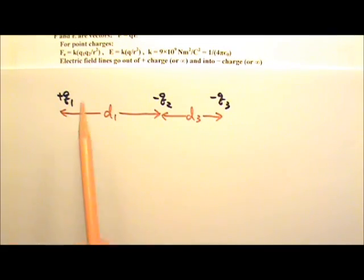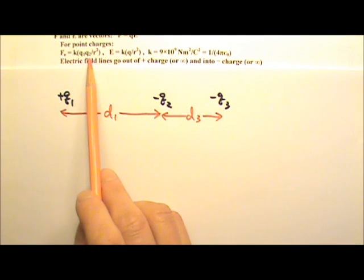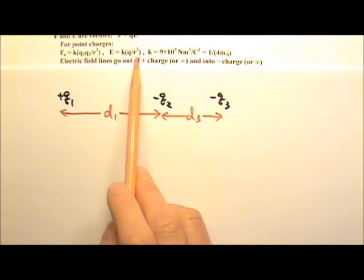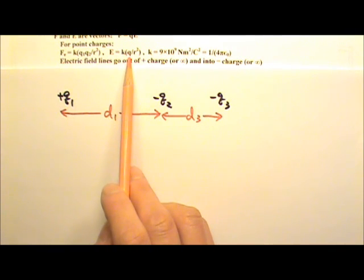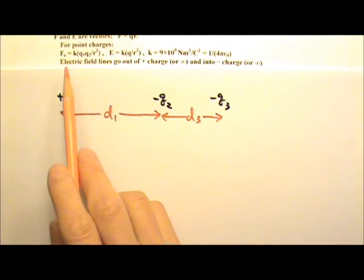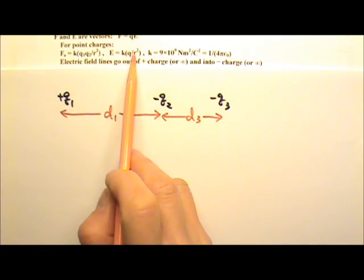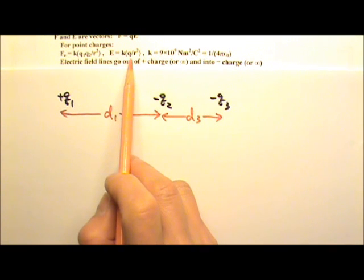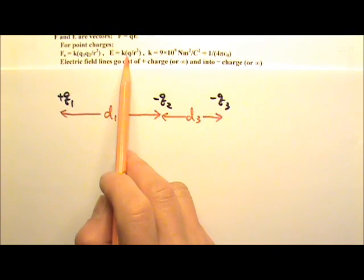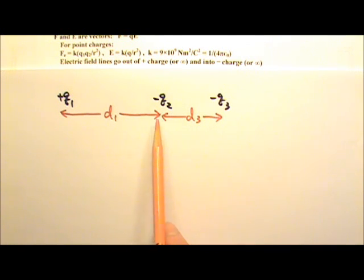For point charges, we can use these equations to find the electric force between two point charges, or use this equation to find the electric field produced by a point charge. Because they are vectors, I do not plug in the signs for these charges. I only use those equations to find the magnitude of the electric force or the electric field, and then I look at the picture for direction.